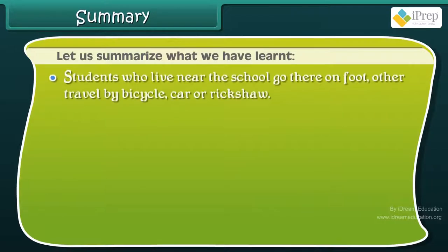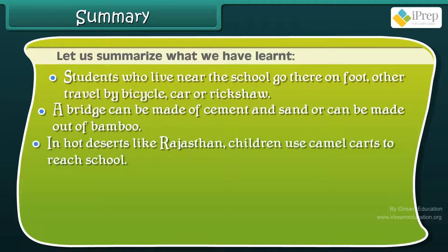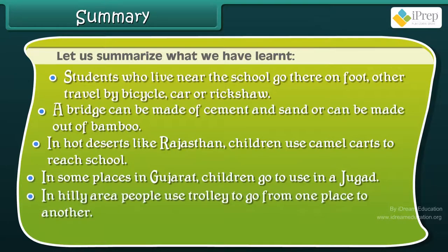Students who live near the school go there on foot. Others travel by bicycle, car, or rickshaw. A bridge can be made of cement and sand or can be made out of bamboo. In hot deserts like Rajasthan, children use camel carts to reach school. In some places in Gujarat, children go to school in a jugaad. In hilly areas, people use a trolley to go from one place to another. A pulley is used to lift heavy loads.